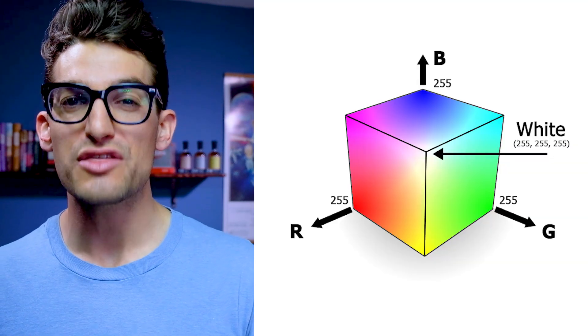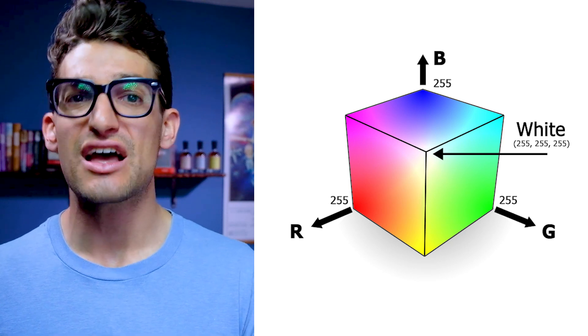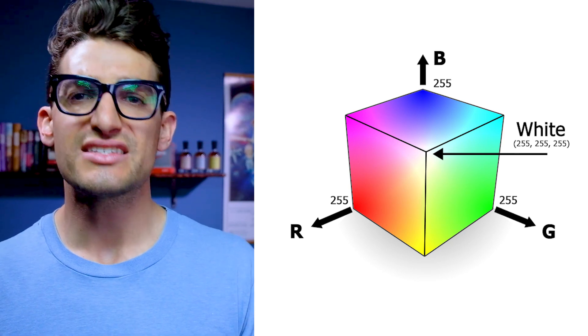Next, color gamuts are three-dimensional, so whether on the printed paper or reproduced within a screen, color consists of three components: hue, saturation, and brightness.